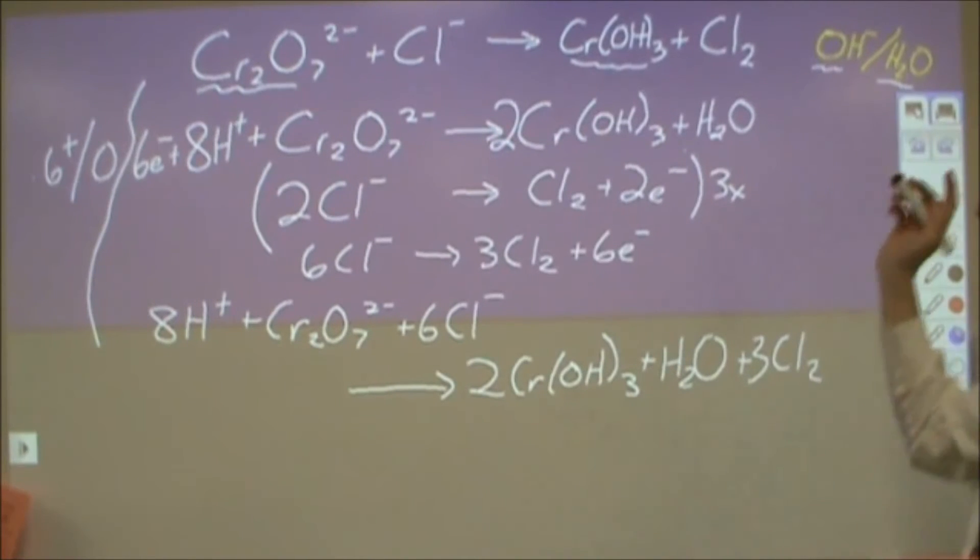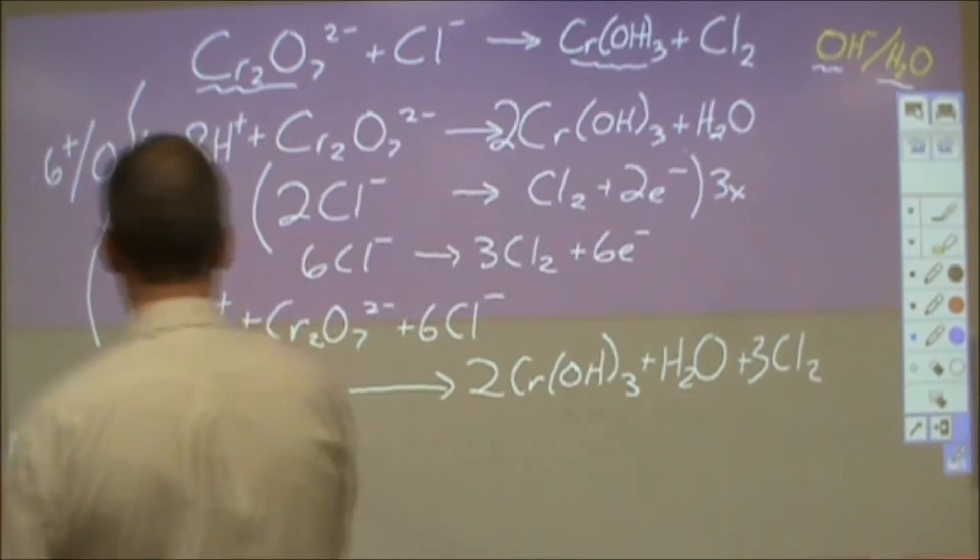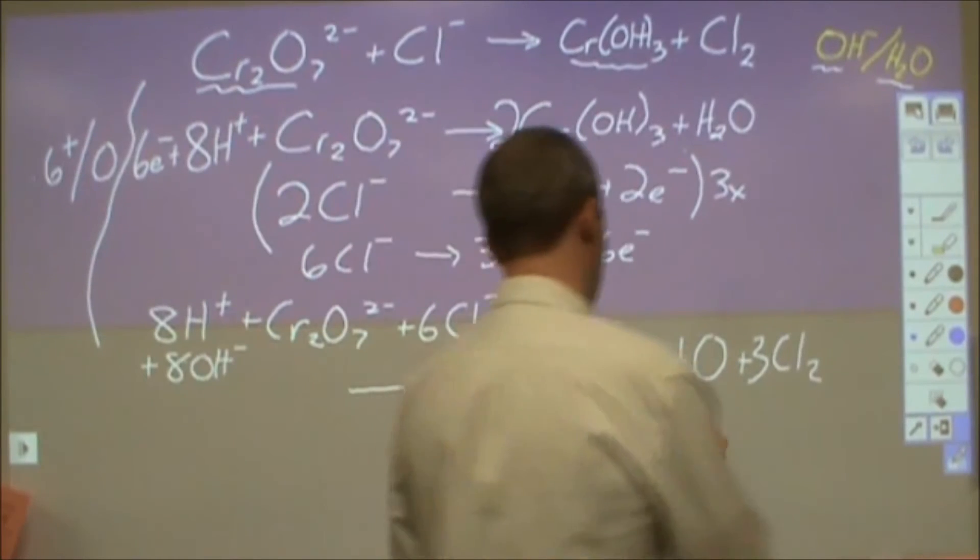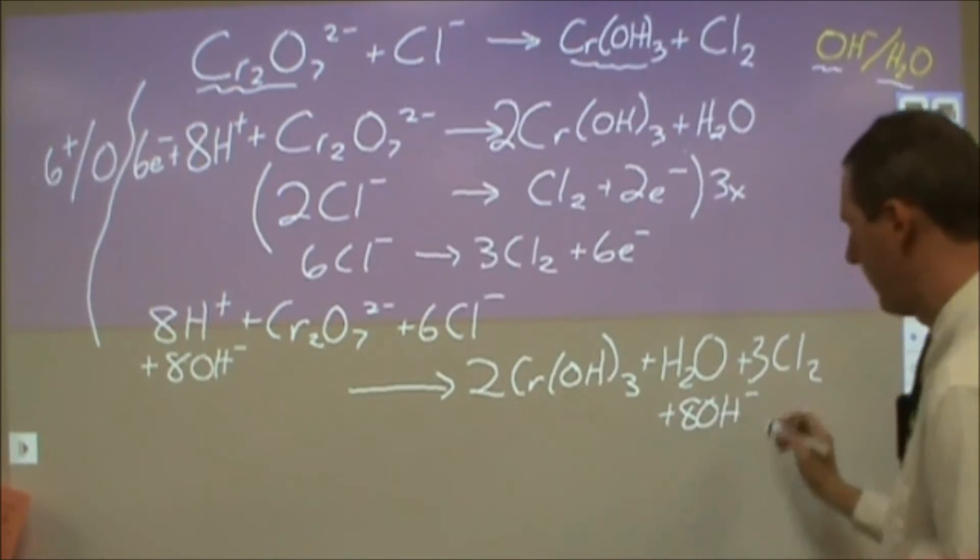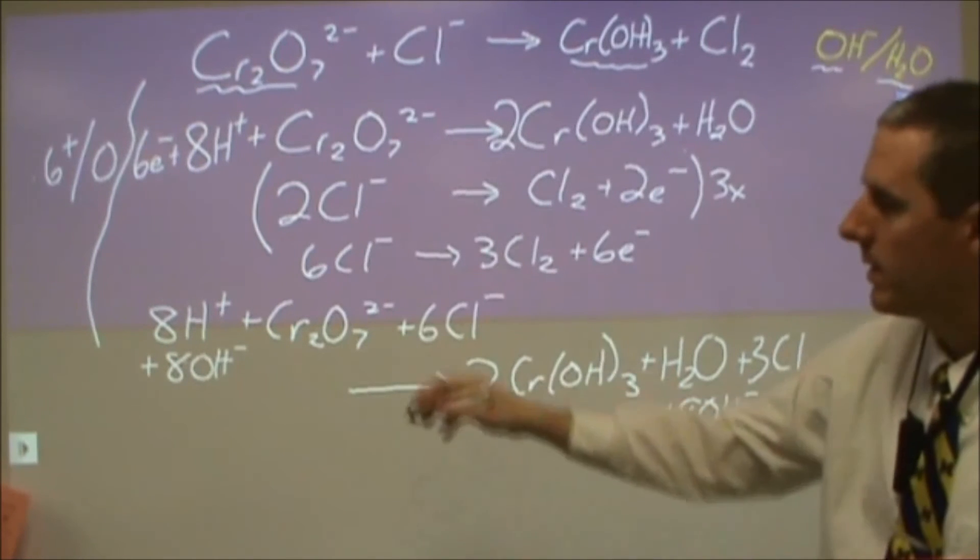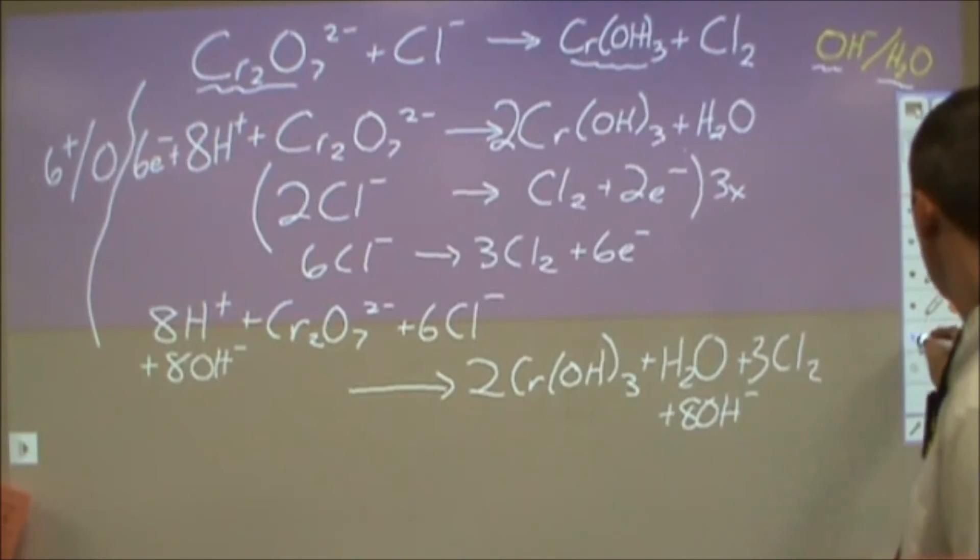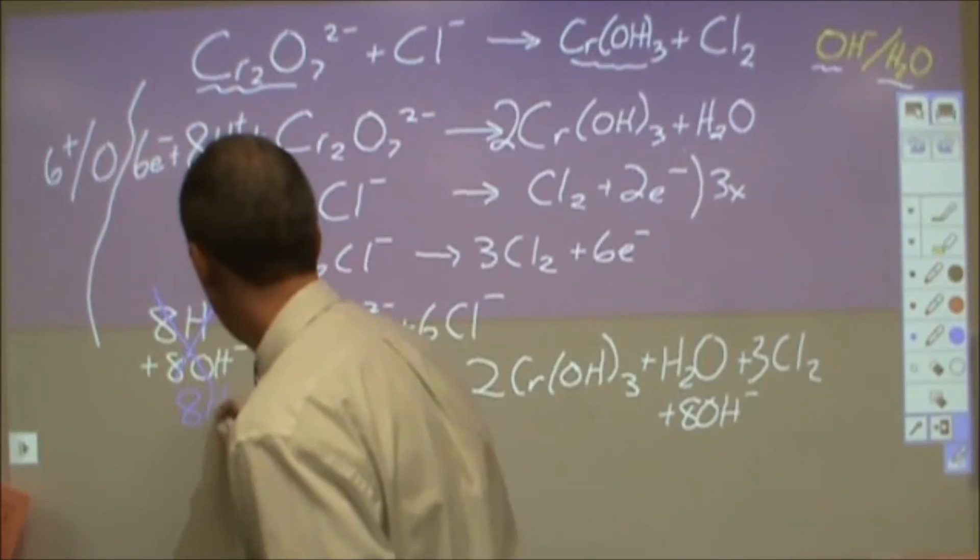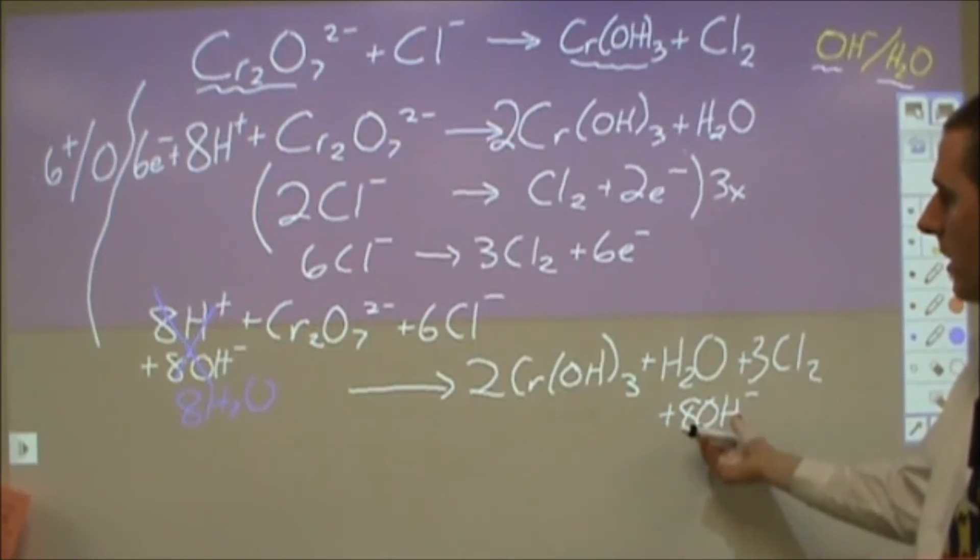For basic what I want to now do is get rid of the H pluses. And to get rid of the H pluses all you do is add however many of those there are. You add that many hydroxides to both sides so that nothing changes, kind of like a Lagrange multiplier here. The eight hydroxides on the left are going to neutralize the H pluses to form eight waters. So these become eight water molecules and then the eight hydroxides over here just stay as is.